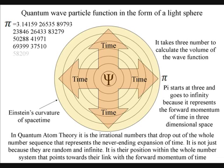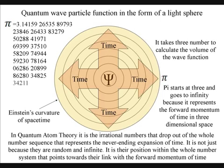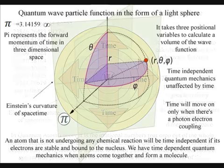In quantum atom theory, the irrational number pi is a physical constant, and represents the expanding curvature of space-time. It is not just because it is random and carries on expanding forever. Its position within the whole number system points towards its link with the forward momentum of time.